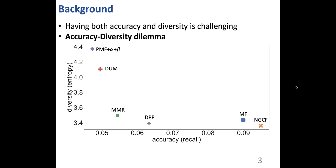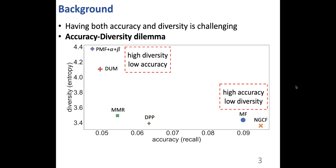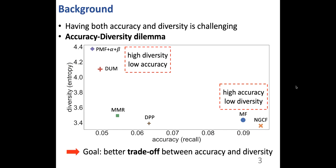However, having both accuracy and diversity is challenging, because there exists a certain accuracy-diversity dilemma. Here, we plot the accuracy and diversity of a few recommender systems. We can observe that recommenders with high accuracy tend to show low diversity, and recommenders with high diversity tend to show low accuracy. So our goal in this paper is to achieve a better trade-off between the two factors, accuracy and diversity.